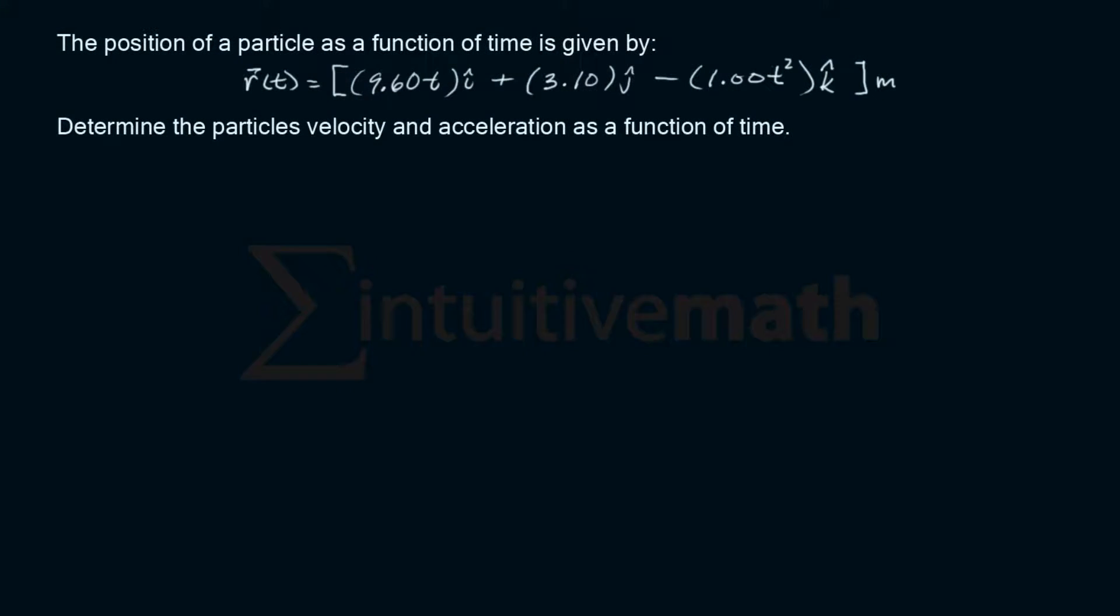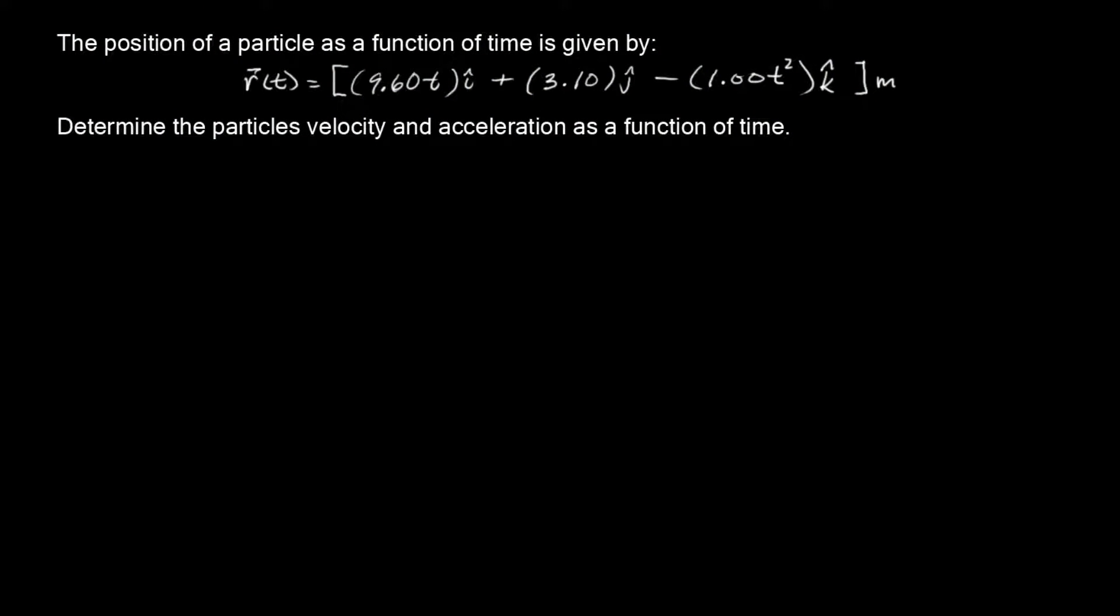Okay, and welcome back. So this is a 3D kinematics problem. There's three parts of this problem, but this is really easy. All we have to do is differentiate. Basically, we have to determine the particle's velocity and acceleration as a function of time. So that just means, I think it's sufficient enough to say, you just have to differentiate this.